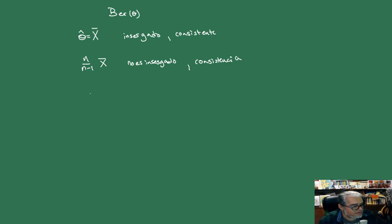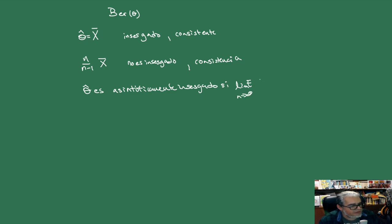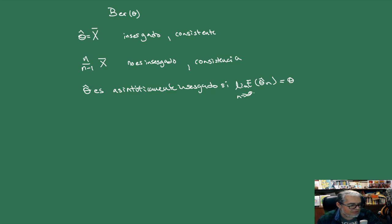Uno podría preguntarse si en el límite es insesgado —es decir, si es asintóticamente insesgado— si eso nos basta para la consistencia; la respuesta es que no. Vamos a decir que theta es asintóticamente insesgado si el límite cuando n tiende a infinito de la esperanza de theta-gorro-n es theta. O sea, en el límite, cuando crece la muestra, sí es insesgado; pero si no nos importa el tamaño de la muestra, pues sí es insesgado.